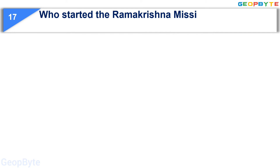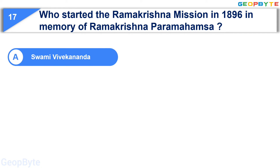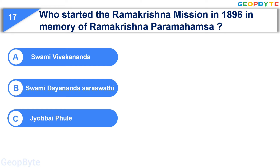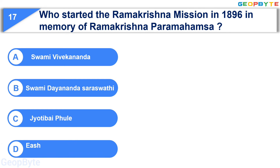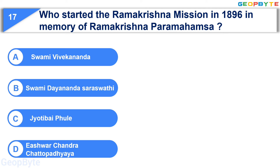Moving to the seventeenth question: who started the Ramakrishna Mission in 1896 in memory of Ramakrishna Paramahamsa? Option A: Swami Vivekananda, Option B: Swami Dayananda Saraswati, Option C: Jyotiba Phule, Option D: Ishwar Chandra Chattopadhyay. Your time starts now. Your time is up and the correct answer is Option A: Swami Vivekananda.